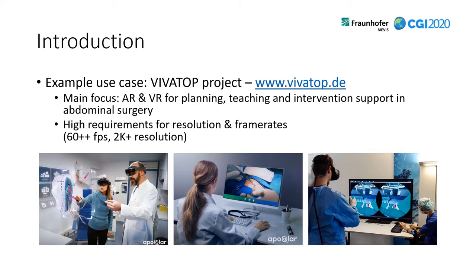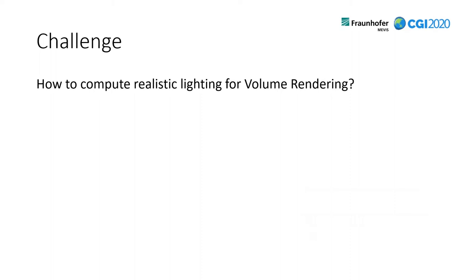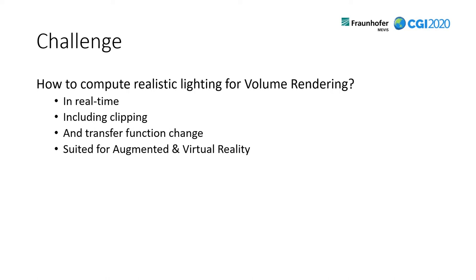Realistic volume rendering is a crucial element in this context, and this paper was therefore released in the context of that project. As we want to employ AR and VR technology, this imposes even higher requirements for resolution and frame rates, because for a convenient experience you need at least 60 frames per second and a 2K resolution. So the challenge is how to compute realistic lighting for volume rendering in real-time, while also supporting clipping and transfer function changes in real-time, and being suited for augmented and virtual reality.